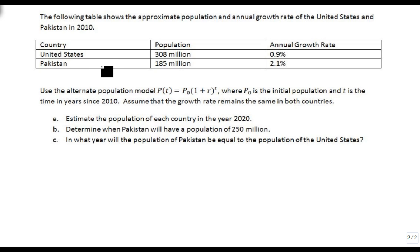We have two countries, the US and Pakistan. The US has an initial population of 308 million with a growth rate of 0.9%, and Pakistan has 185 million with a growth rate of 2.1%. We want to use this new model: population at time t equals the initial population times (1 + r) raised to the t power, where P₀ is our initial population and t is the time in years since 2010. We'll assume that the growth rate remains constant.